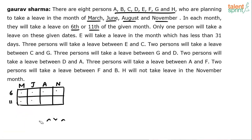Within this setup, we can get multiple possibilities depending on what kind of clues are given. E will take a leave in a month which has less than 31 days. March has 31 days, August has 31 days, June has 30 days, and November has 30 days. So E will take a leave either in June or in November — E cannot take leave in March or August.